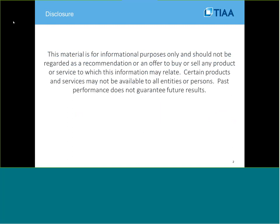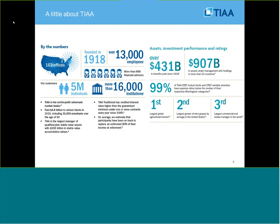From a disclosure perspective, we are a financial services company, so here's our standard disclosure. A little bit about TIAA: we are a financial services company that's been around for just about 100 years. Right now we have over 13,000 employees and just short of $1 trillion in assets that we manage for over 5,000 participants and 16,000 institutions. We offer all manner of financial services from IRAs to 401K services, education savings, et cetera. Our biggest market right now is retirement, managing retirement for colleges and universities and not-for-profit hospitals.